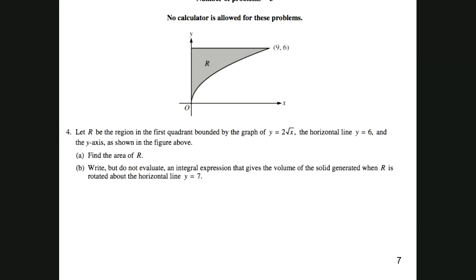Let's take an example. Let R be the region in the first quadrant bounded by the graph y equals 2√x and the horizontal line y equals 6, as shown. Find the area of R. The integral goes from 0 to 6: top function 6 minus bottom function 2√x. Take the integral — I can find the area between these two curves, no problem.